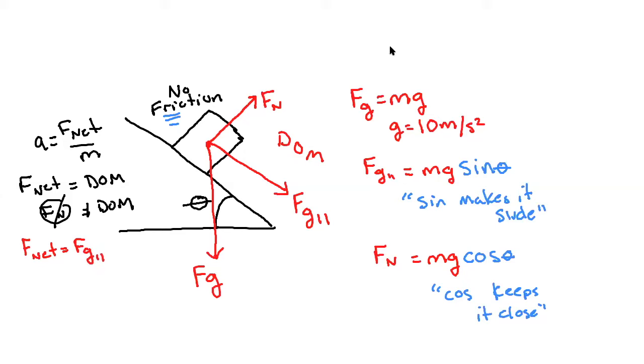So now when I want to solve for A, I see that A is equal to Fg parallel over the total mass of the system. And Fg parallel is mg sine makes it slide theta divided by M. And look at this. This is wonderful. Boom. So now we have an expression that we can use for an incline. And we could say that A is going to be equal to G sine theta.